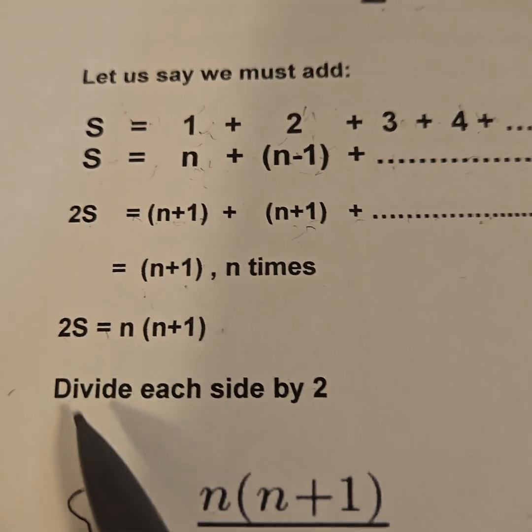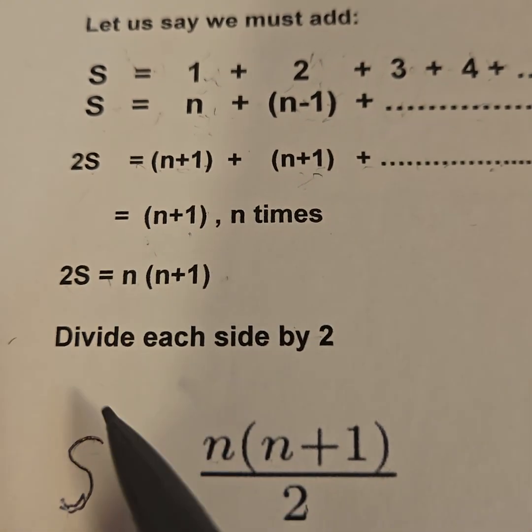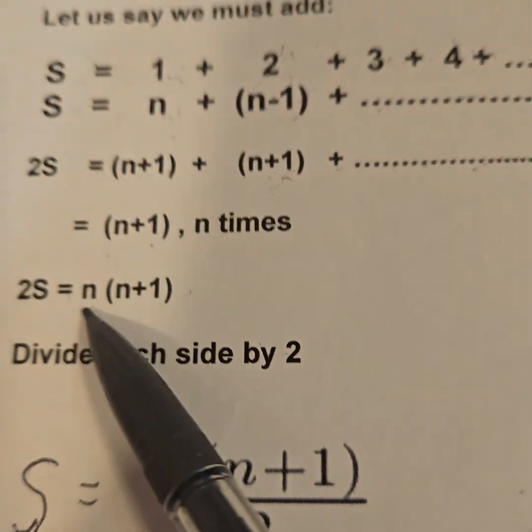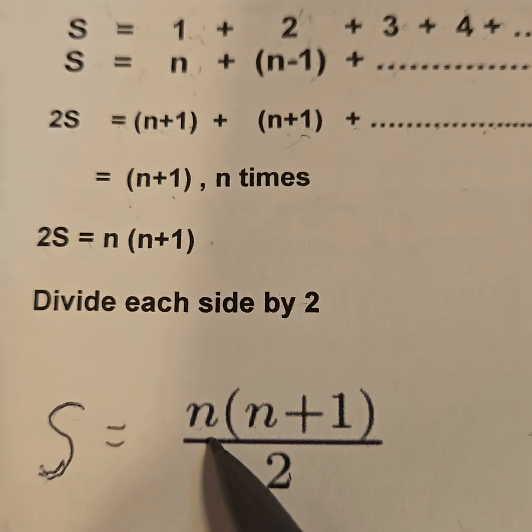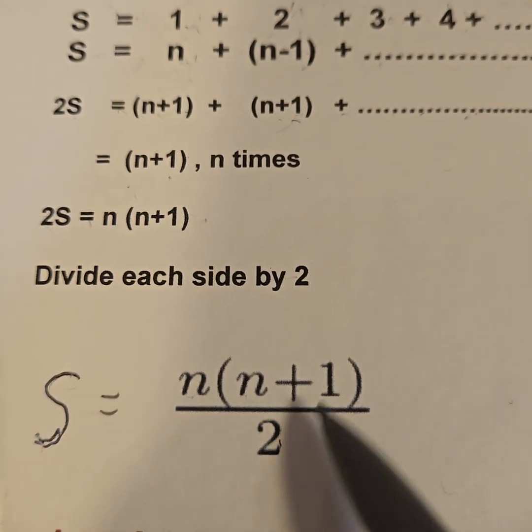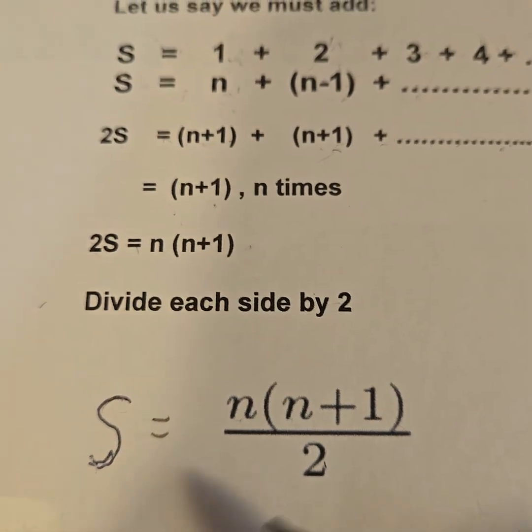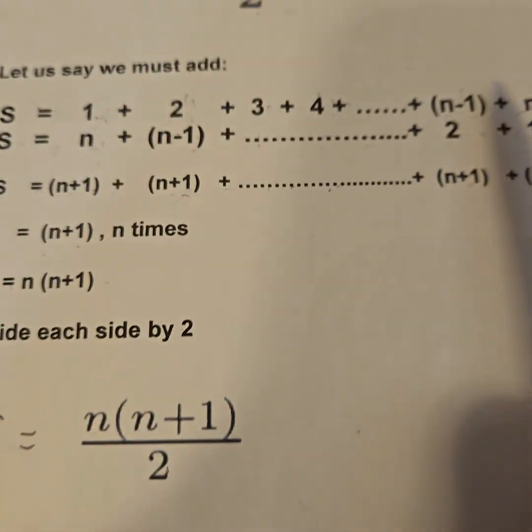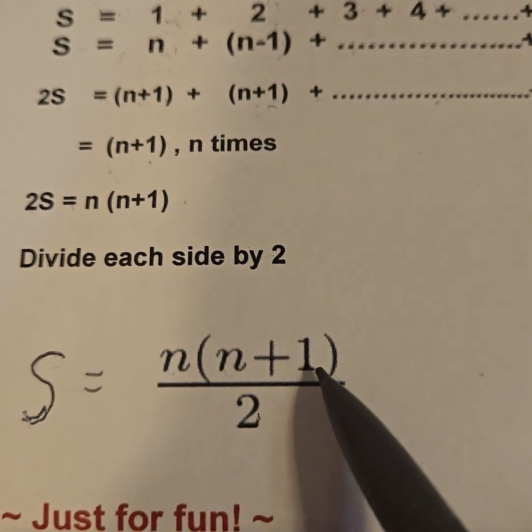2S divided by 2 is just S, and n times (n+1) divided by 2 is exactly that: n(n+1)/2. I have now proven that formula I said. No matter what that n is, that total S is n times (n+1) over 2. Proven.